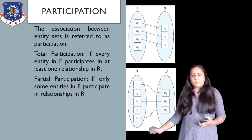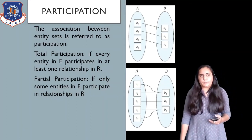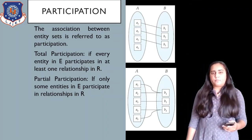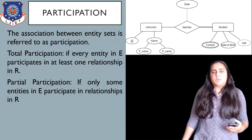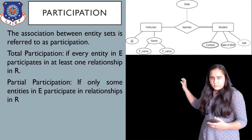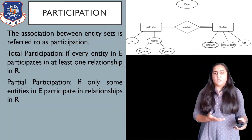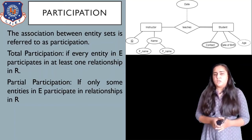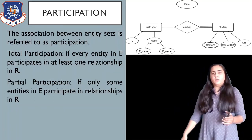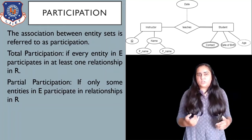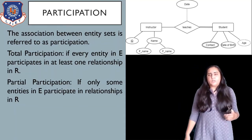Here you can see that both entities are totally participating in the relationship. To show this in a diagram, consider a relation between a teacher and a student. Every instructor is not necessarily teaching a student — some instructors may only be doing research — so that would be a partial participation, shown with just one single line. But every student is definitely related with some instructor in the university, so we create two lines to show total participation.